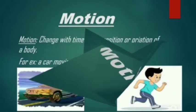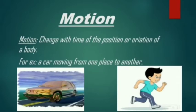What is motion? Motion is change with time of the position or orientation of a body. For example, a car moving from one place to another.